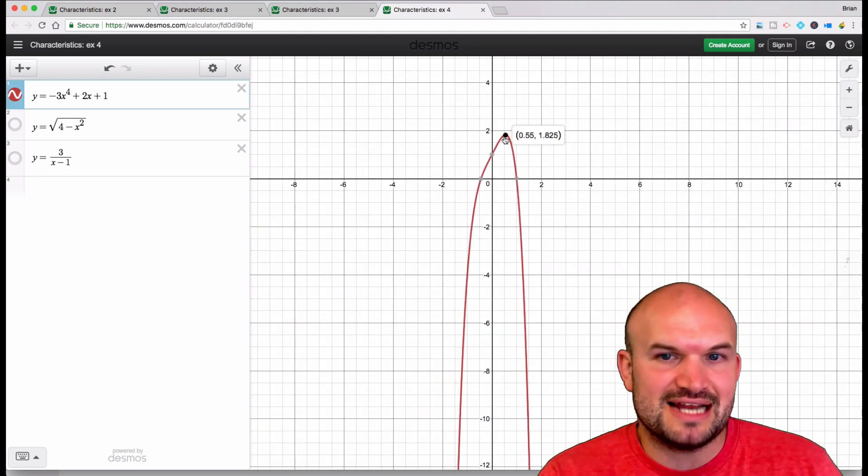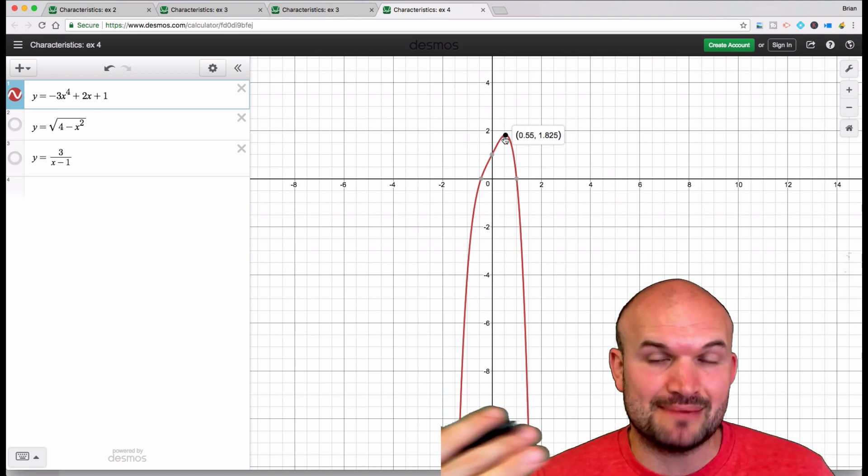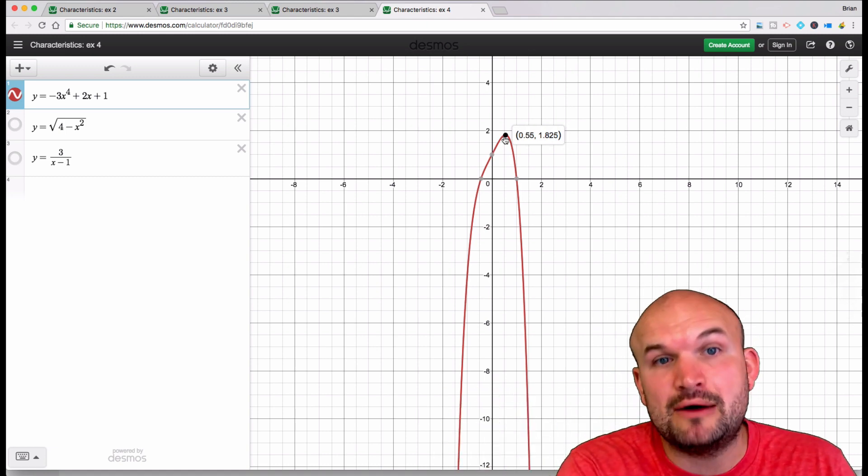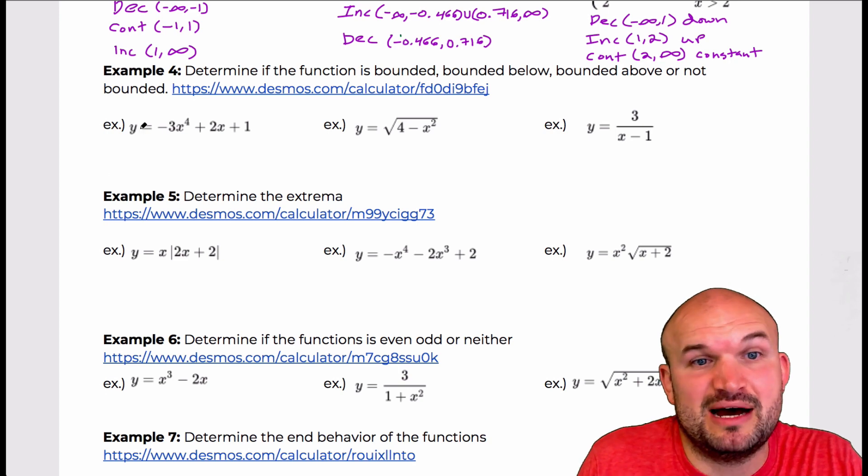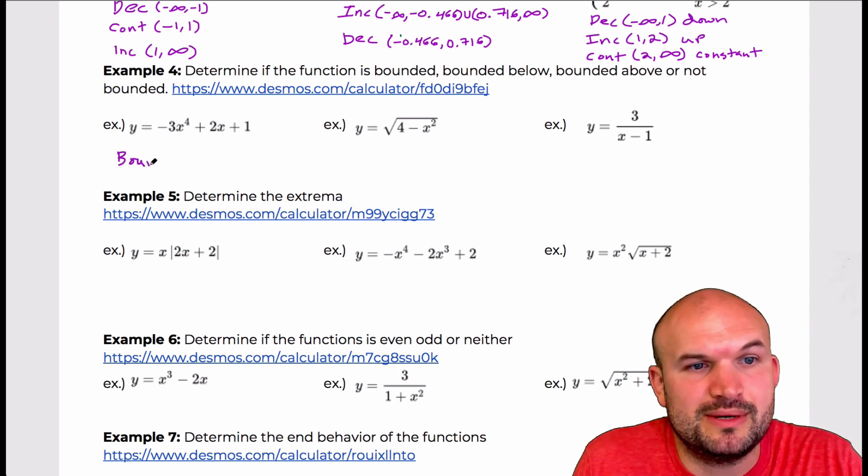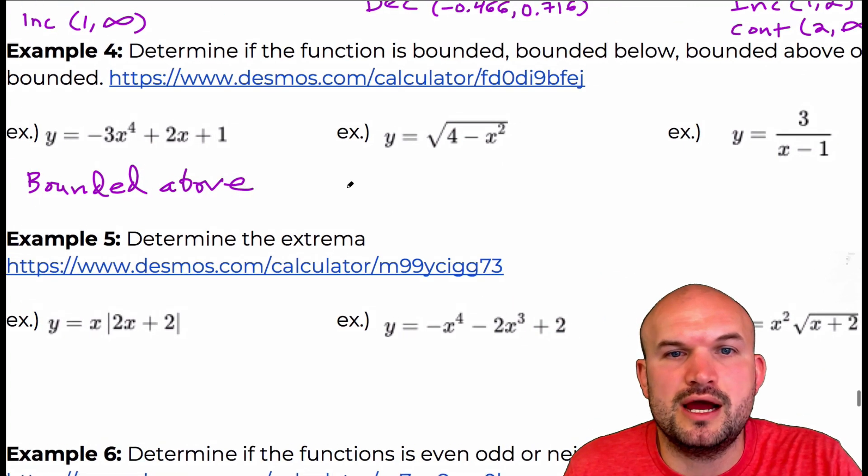The graph does not go above the y value of 1.825. So that is your absolute maximum value, and therefore we can say that the graph is bounded above. So all I'm going to do is just say that it's bounded above. I don't need to say where it occurs, that'd be for the extrema. Bounded above.